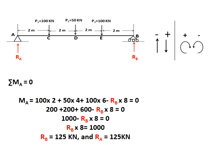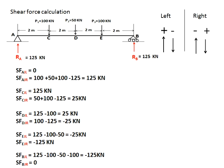Substituting RB into the first equation RA plus RB equals 250, we get RA equals 125. Now I have both reactions RA and RB. Now I'm going to find the shear force.